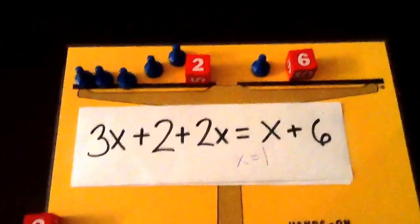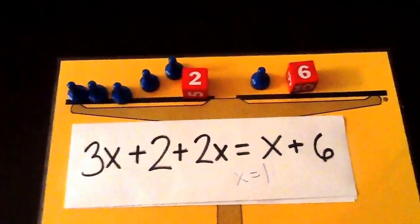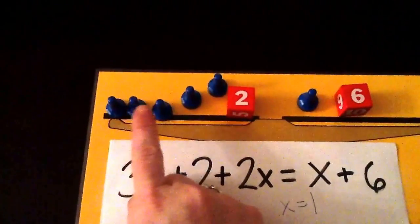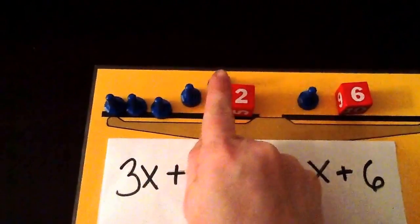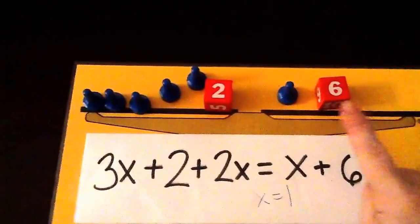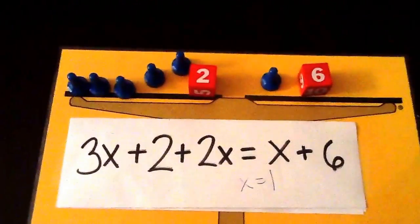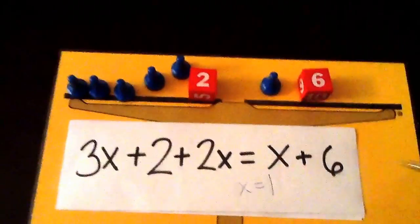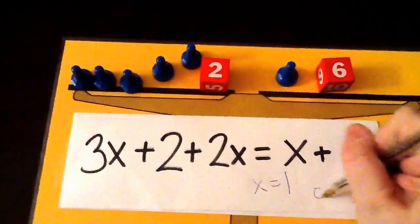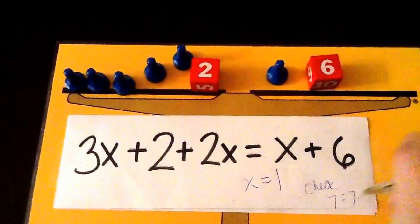So if we go back to that original setup, if x equals 1, we have over here 1, 2, 3, 4, 5, plus 2 is 7. And over here we have a 6 plus 1, which is 7. So both sides equal 7, which means that our check is 7 equals 7, which we know is correct.